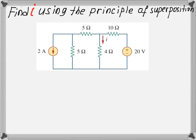Now let's start solving the problem. We'll start by turning off the 2A source. Turning off the current source means we create an open circuit, so we can remove that branch entirely. Now we move to this simpler circuit with only one power source — 20 volts — which we need to analyze to find current I. Because this is the first step, we'll call this current I1.